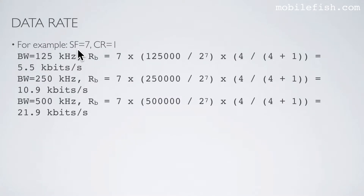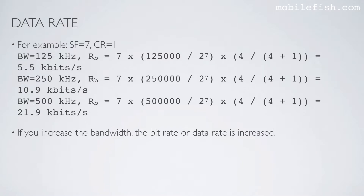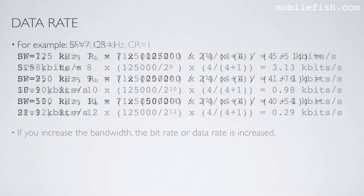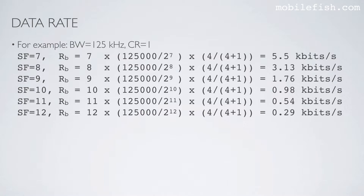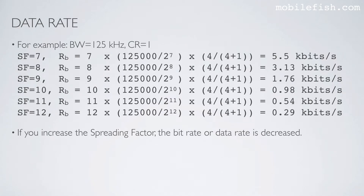Here are some examples. If the spreading factor is 7 and the coding rate is 1, then these are the bit rates for different bandwidths. If you increase the bandwidth, the bit rate or data rate is increased. Another example: the bandwidth is 125 kHz and the coding rate is 1. These are the calculated data rates for different spreading factors. If you increase the spreading factor, the bit rate or data rate is decreased.